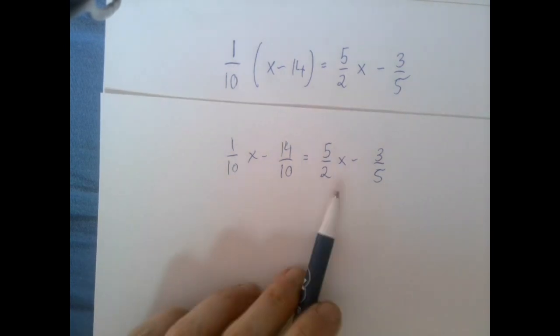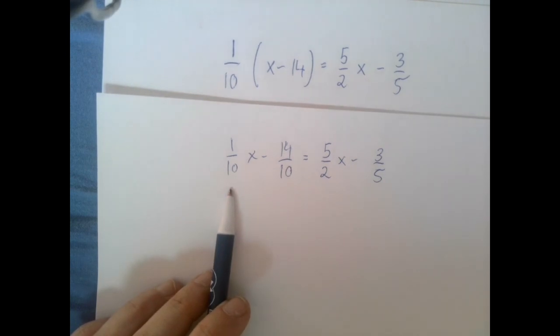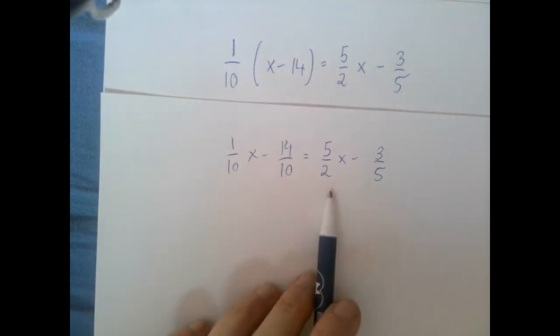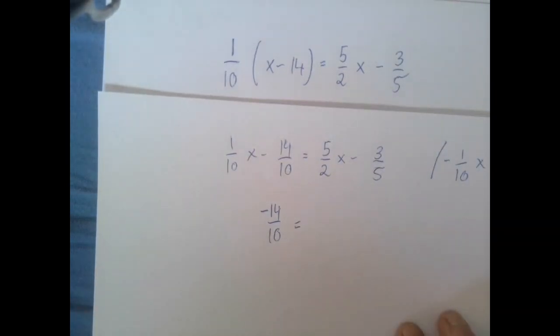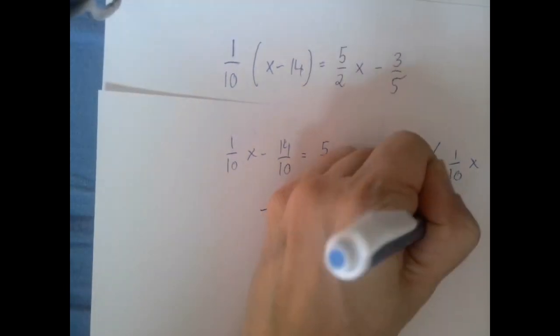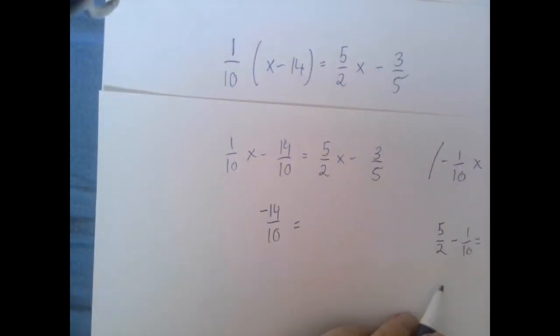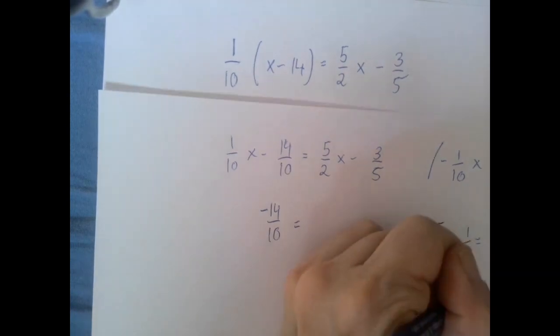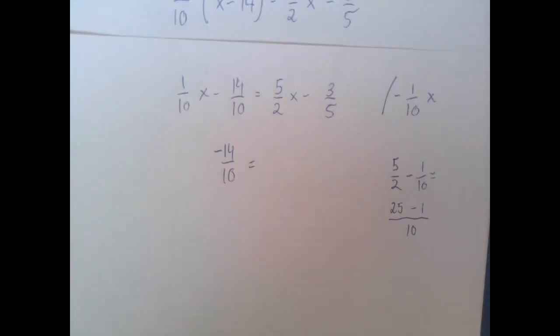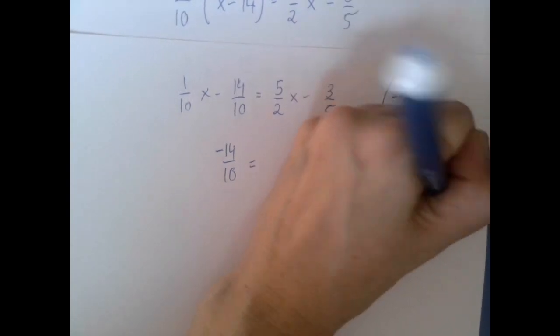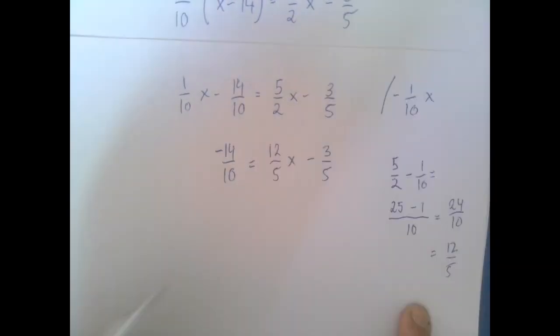So first we're going to work on the fact that both sides contain x. Clearly this is much smaller, this is 0.1, this is 2 and a half, right? So we're going to subtract 1 over 10x from both sides. On the left hand side we're left with negative 14 over 10 alone and on the right hand side for the coefficient of x we have to perform the subtraction 5 over 2 minus 1 over 10. So the common denominator is 10 and then 2 to 10 is 5 times so we multiply the top by 5, that's 25. So we have 24 over 10 or 12 over 5.